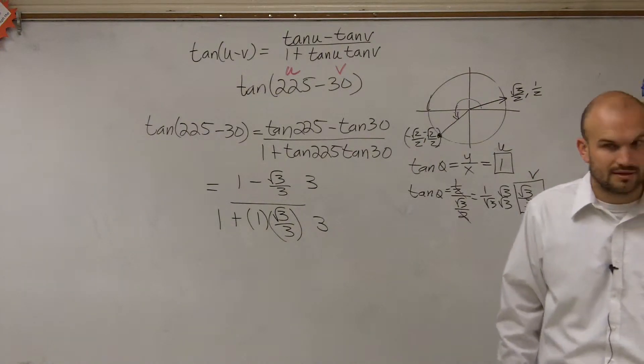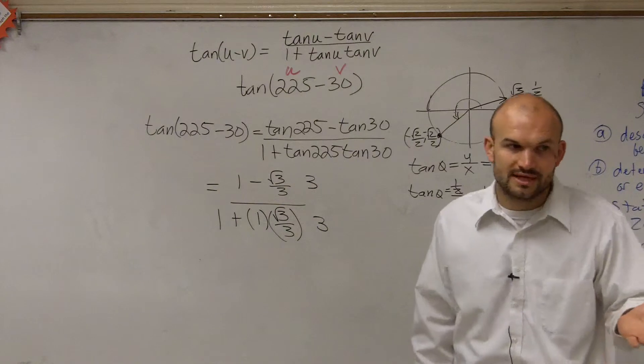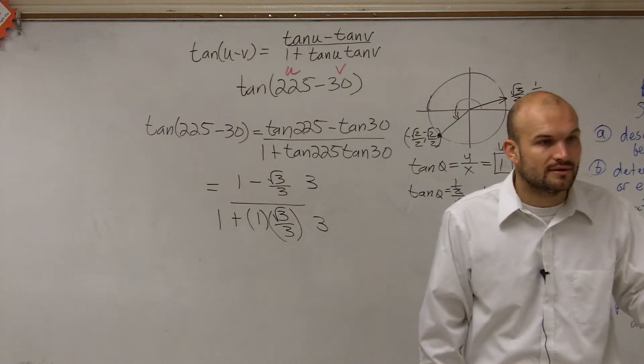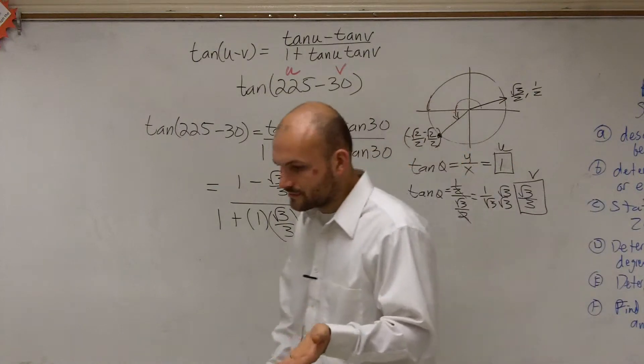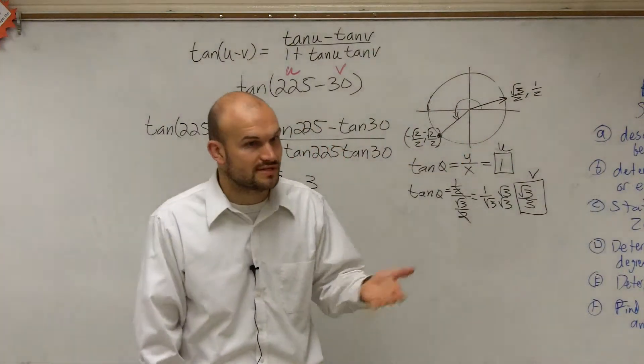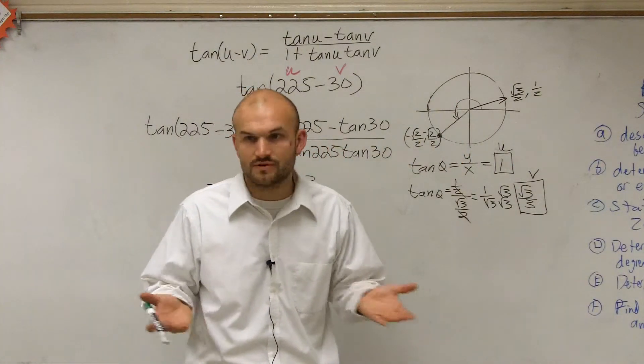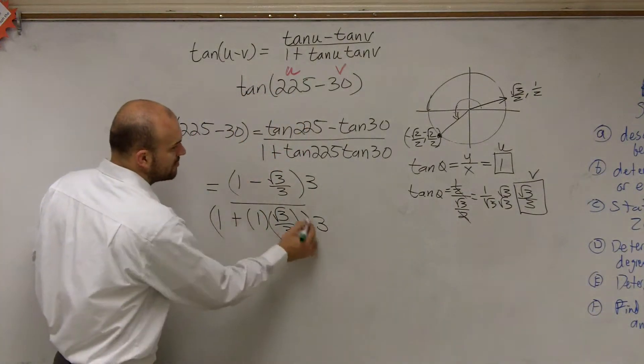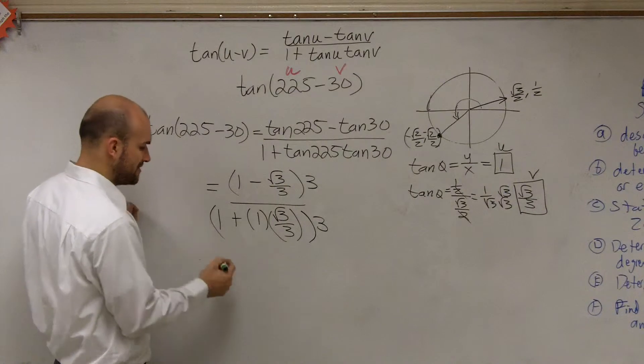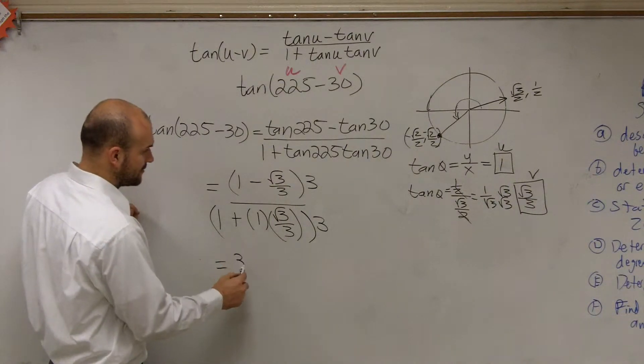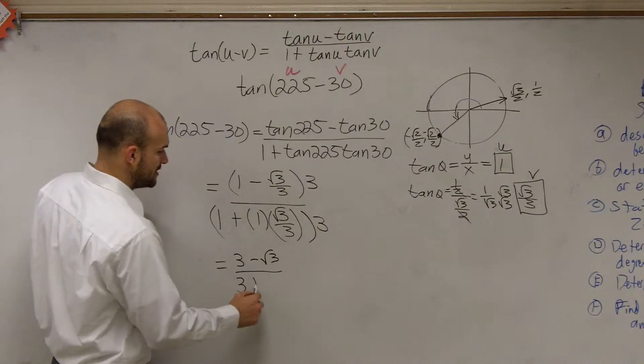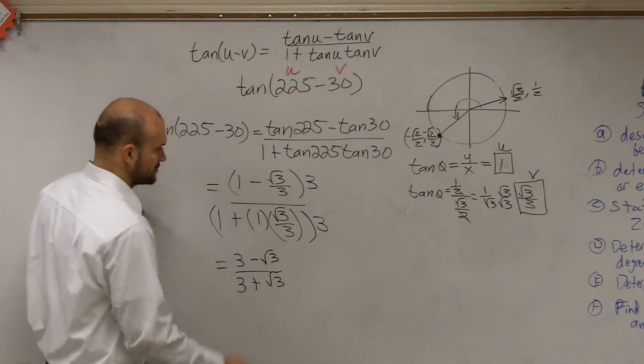Think about like 2 fourths, that's the same thing as if you multiply the top and bottom by 3, that would be 6 twelfths. Is 6 twelfths equal to 2 fourths? Yeah. So as long as you multiply the top and bottom by the same number, you're going to be fine. Therefore now I get 3 minus the square root of 3 over 3 plus the square root of 3.